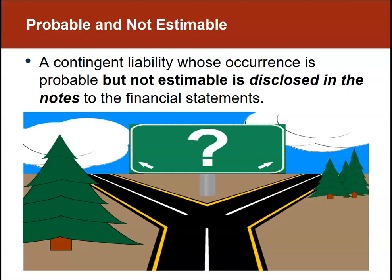But what if we know an event is likely to happen, but we can't really estimate the amount of the liability? A contingent liability whose occurrence is probable but not estimable is disclosed in the notes to the financial statements. If the liability exists but you're unable to estimate it, it's not going to appear on the balance sheet. We can't put it on the balance sheet because we have no justification for whatever amount we would record. We disclose it in the notes so our financial statements remain fairly stated to investors and outside parties.